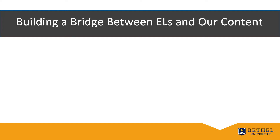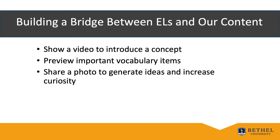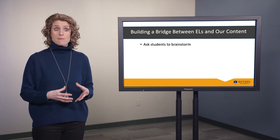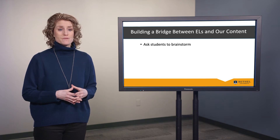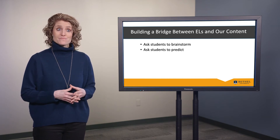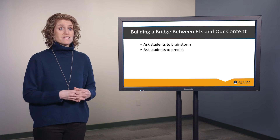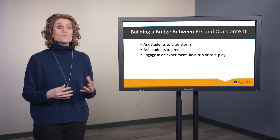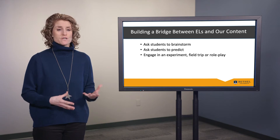We can build background in a number of different ways. We can show a video to introduce a concept, such as showing a clip from the film Far and Away for a unit on Westward Expansion or the Oklahoma Land Rush. We can preview important vocabulary items, share a photo to generate ideas and increase curiosity, or complete a graphic organizer. We can ask students to brainstorm — perhaps giving them three minutes to think of as many leaders associated with the civil rights movement. We can ask students to predict. Interestingly, research shows that students remember information better if their prediction was wrong — dissonance fosters retention. We can also engage in an experiment, field trip, or role play, such as taking a field trip to a nearby zoo to see producers and consumers in action.